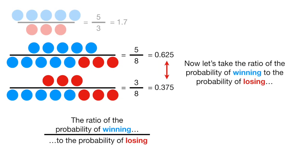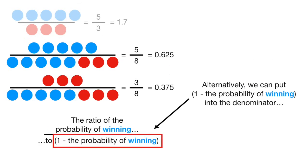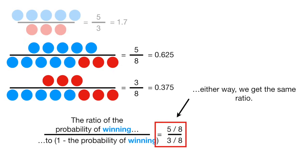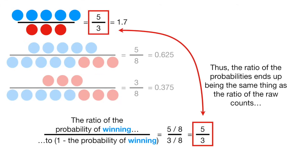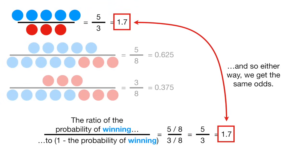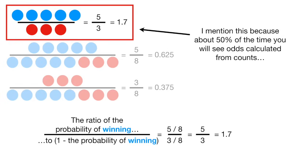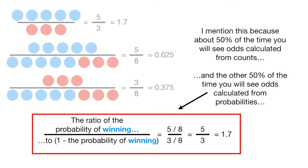Now let's take the ratio of the probability of winning to the probability of losing. Alternatively, we can put 1 minus the probability of winning into the denominator. Either way, we get the same ratio, 5 divided by 8 divided by 3 divided by 8. The 8's cancel out, since they scale the numerator and the denominator by the exact same amount. Thus, the ratio of the probabilities ends up being the same thing as the ratio of the raw counts. And so either way, we get the same odds, 1.7. I mention this because about 50% of the time you see odds calculated from counts, and the other 50% of the time you will see odds calculated from probabilities. Either way, you get the same results.